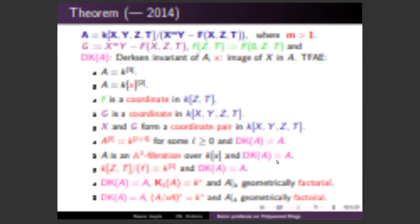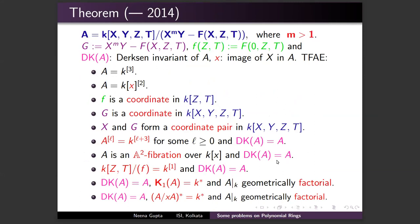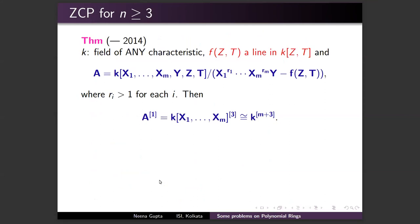In the Asanuma ring, the polynomial f is a non-trivial line, and in the Russell–Koras threefold, f = z² + t³ is a cusp. These five equivalent conditions connect various problems including the cancellation, epimorphism, and fibration problems. I proved an equivalence of 10 statements — the first five already stated, and the later five based on the Derksen invariant and its relation to group actions, stable polynomial rings, affine 𝔸²-fibrations, and K₁ groups.